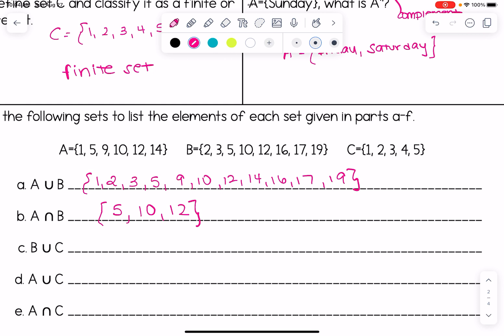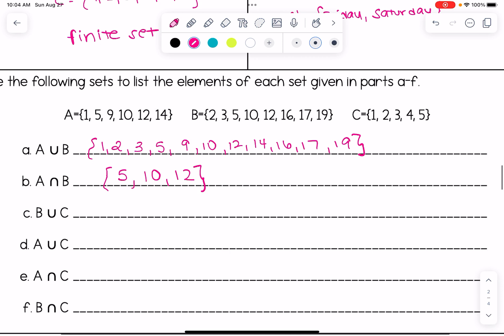All right we're going to do the same thing but with some other set combinations here. So C is asking us to unite B and C together. And if it helps you to cross off as you go you certainly can. So I have 1, 2, 3, 4, 5, 10, 12, 16, 17, 19 when I unite sets B and C.